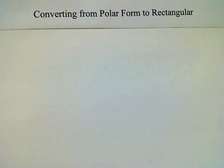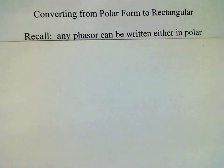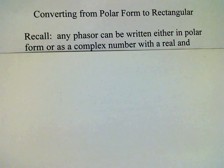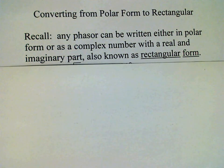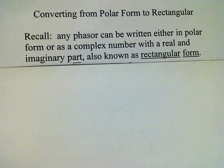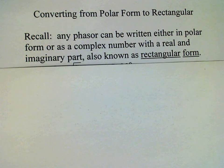Any phasor can be written either in polar form or as a complex number with real and imaginary parts. As a complex number it is also known as rectangular form because graphically it can be located using x and y coordinates in the plane.